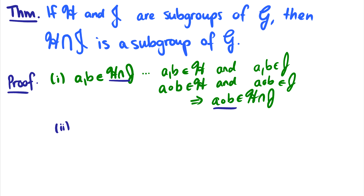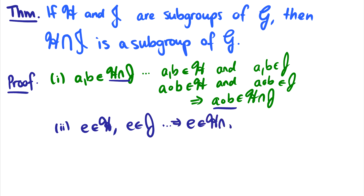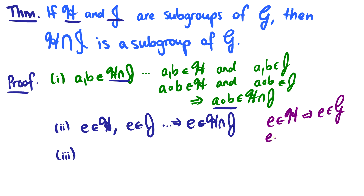Now for the identity: if e is in h and e is in j, then clearly e is going to be in h intersection j. That's the identity — straightforward. Since h and j are both groups they contain an identity, so the intersection should have the same identity. We know they have the same identity because h and j are subgroups of g: e in h implies e is in g, and e in j implies e is in g, which means both identities must be the same, since we can only have one identity per group, as proven in the last video.